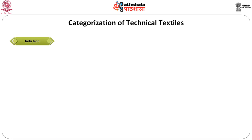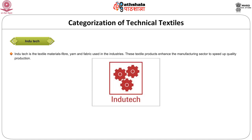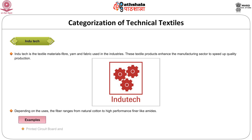The next category is Indotech. As the name says, this includes fibers, yarns and fabrics used in the industry. These textile products enhance the manufacturing sector to speed up quality production. It is represented by three moving gears close to each other. Depending upon the end use, the fibers are modified from natural cotton to high performance fibers like amides. You can see two pictures — the printed circuit board and drive belt — as examples of Indotech.